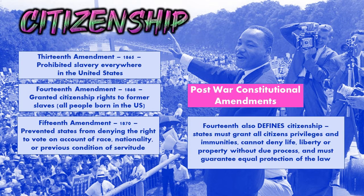The 13th Amendment prohibits slavery anywhere in the United States — an amendment to the Constitution that bans slavery. Of course, that did not go far enough. The states would just say no slaves and not grant any equality to those people. So the 14th Amendment goes further. It grants citizenship rights to all former slaves and, in fact, to all people born in the United States. So that takes care of citizenship.